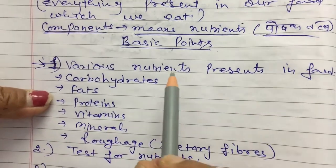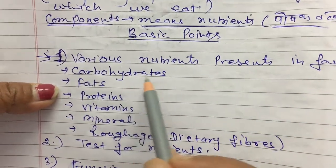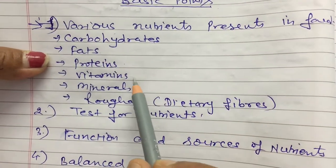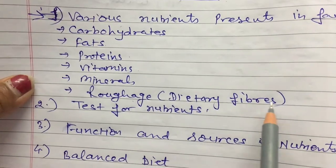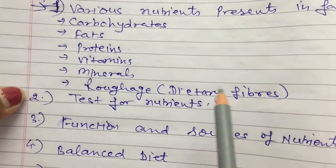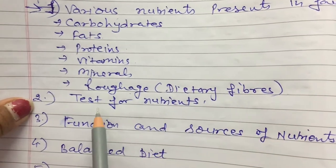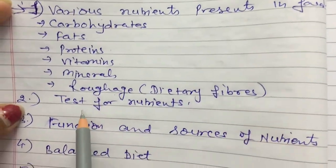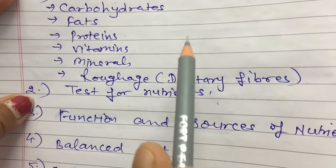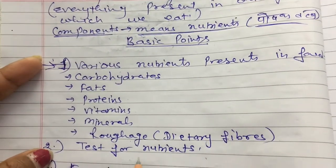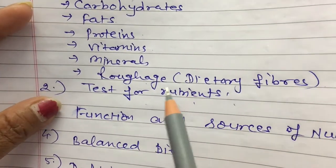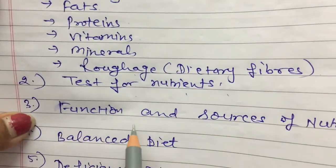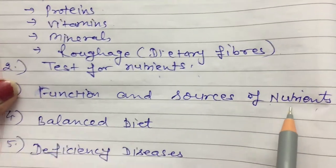The first basic point is: various nutrients present in food. In our food there are many nutrients, which we have also told you before — such as carbohydrates, fats, proteins, vitamins, minerals, and roughage. Roughage is also known as dietary fibers. The second basic point is the test of nutrients — how we will test which food contains which nutrient.